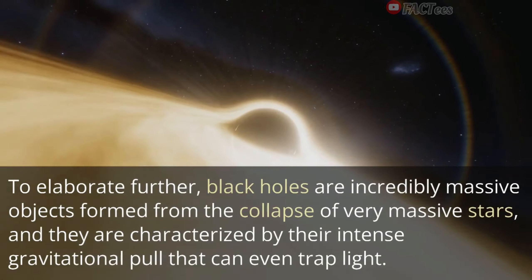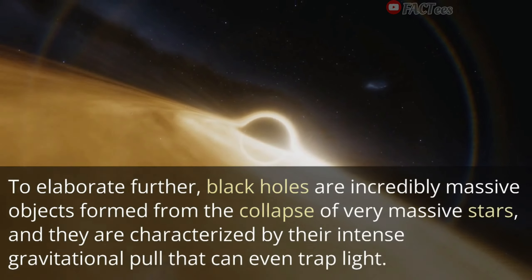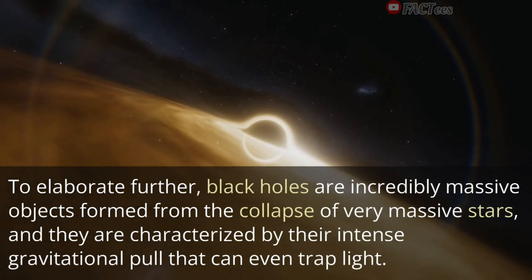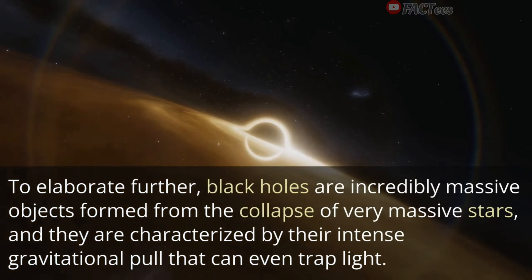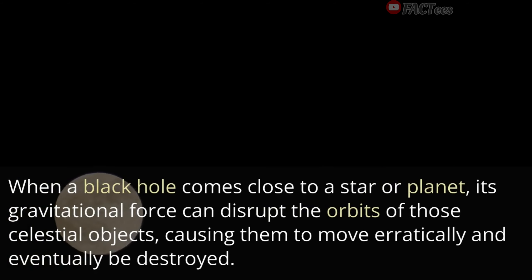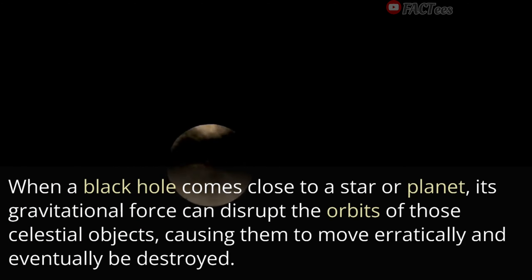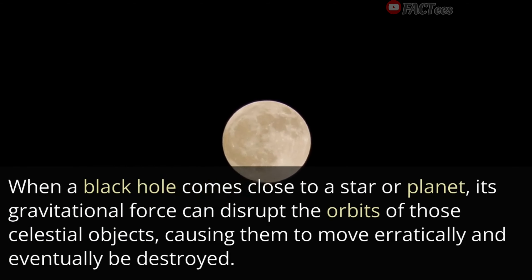To elaborate further, black holes are incredibly massive objects formed from the collapse of very massive stars, and they are characterized by their intense gravitational pull that can even trap light. When a black hole comes close to a star or planet, its gravitational force can disrupt the orbits of those celestial objects, causing them to move erratically and eventually be destroyed.